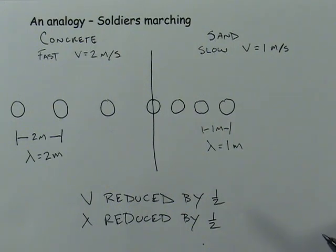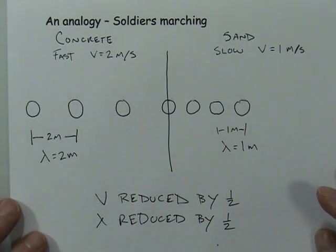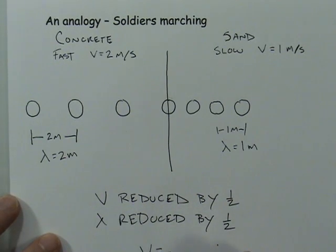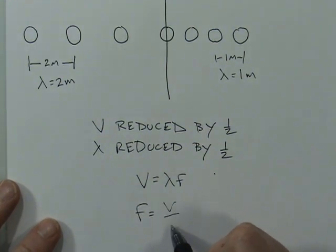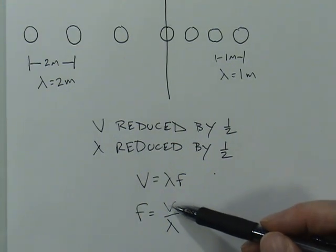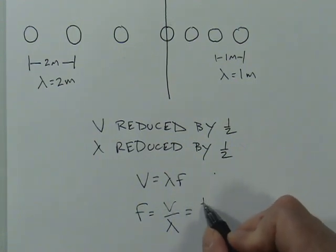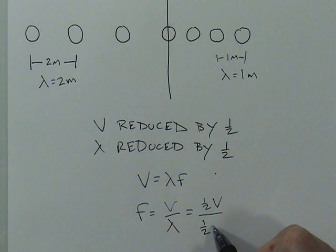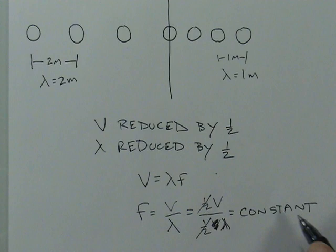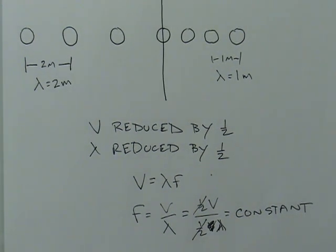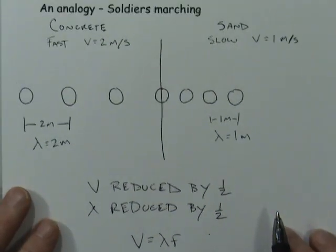The question is: what about the remaining important wave property — the frequency? Was the frequency impacted? The equation says velocity equals wavelength times frequency, so frequency equals V divided by lambda. In this case, the original V and the original lambda were both reduced by one half. These two things cancel each other out, so essentially the frequency should have remained constant. When a wave transitions from one medium to another and we see a change in wavelength, we should not see a change in frequency.